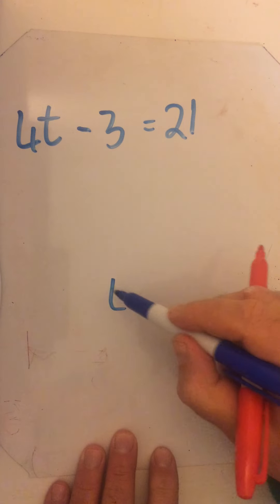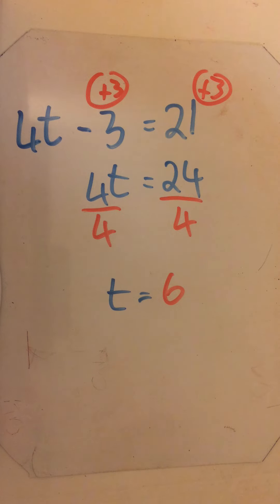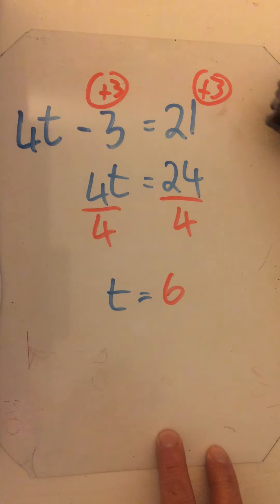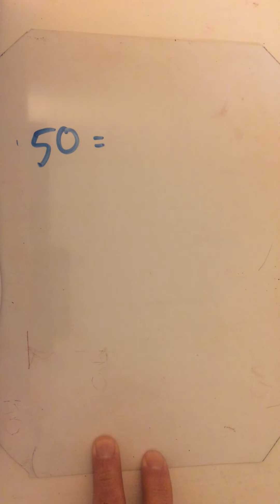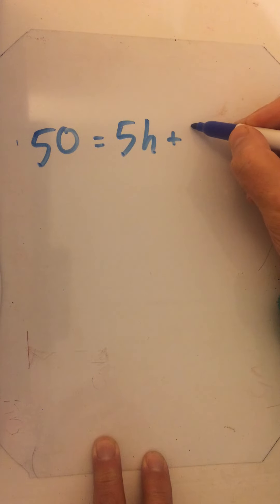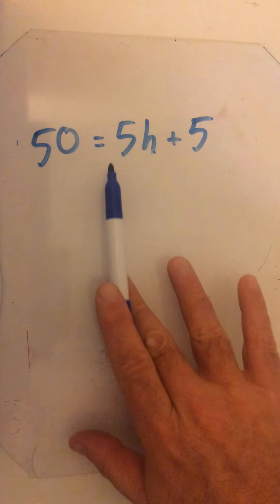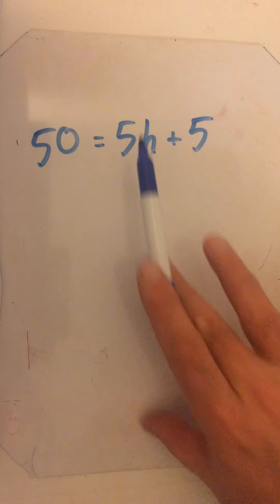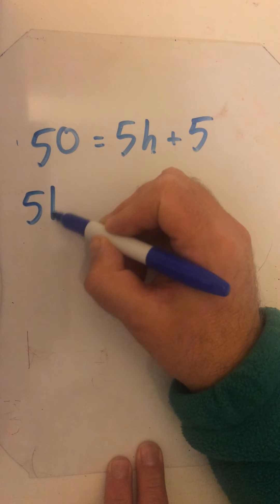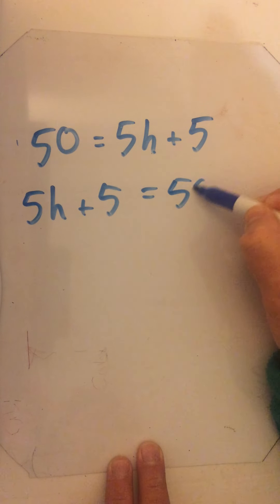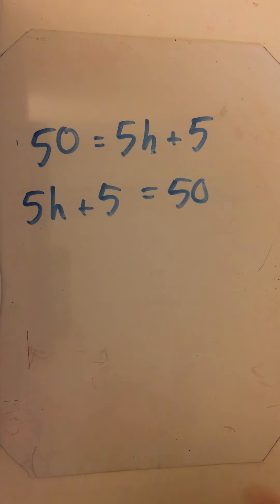Could you please copy that example down so you've got it for reference — we've got 4t minus 3 equals 21 as our initial one. Pause the video briefly while you copy it down, then press play when you're done. Remember, you can pause and rewind anything you're not sure of in these videos. Now let's look at this question: 50 equals 5h plus 5.